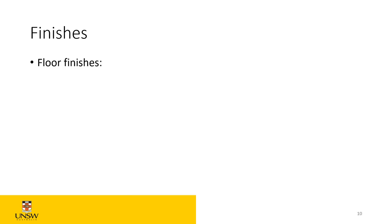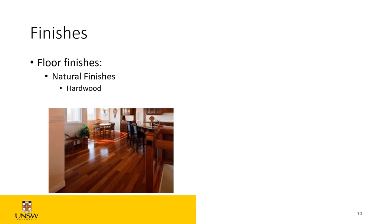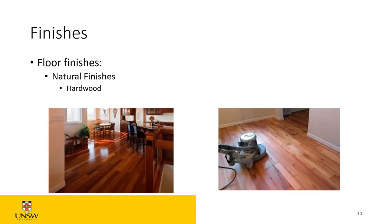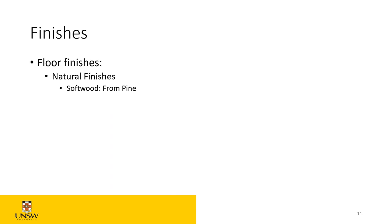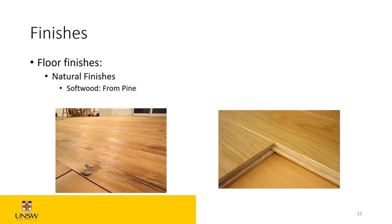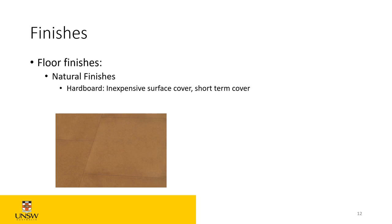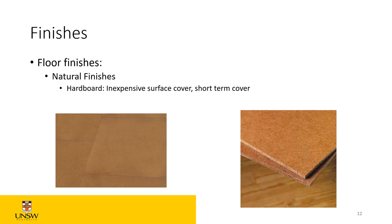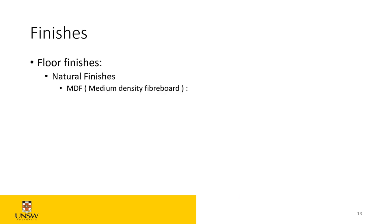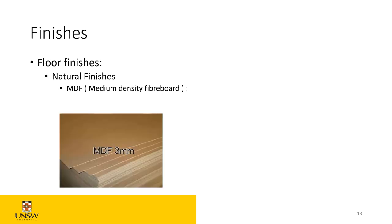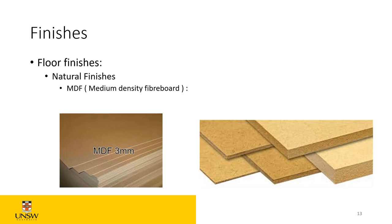With finishes, we talked about floor finishes. We have natural finishes like hardwood, soft pine, and tongue-and-groove finishes. We also talked about hardwood boards used as inexpensive surfaces for short-term protection of tiles or timber flooring. With natural finishes we also spoke about MDF — medium density fibre board — which is used in carcasses of joinery. They're very cheap, around 3mm thick.